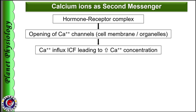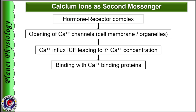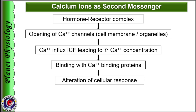The last type of second messenger is calcium ions. The hormone-receptor complex opens calcium channels either in the cell membrane or in cell organelles, leading to calcium influx and rise in intracellular calcium concentration. In some tissues, release of calcium from cell organelles triggers opening of calcium channels in the cell membrane, leading to further calcium influx. Calcium ions then bind with calcium binding proteins like calmodulin, troponin C or calbindin within the cell and initiate cellular response. It may be in the form of activation of myosin light chain kinase, leading to phosphorylation of myosin or phosphorylation of any other intracellular protein. The hormone gastrin acts via calcium as second messenger.